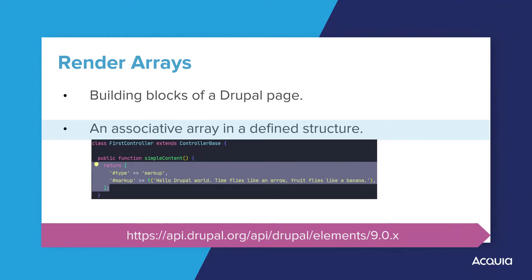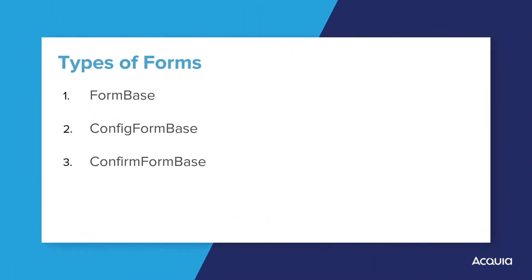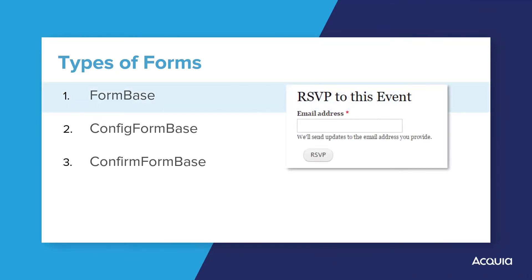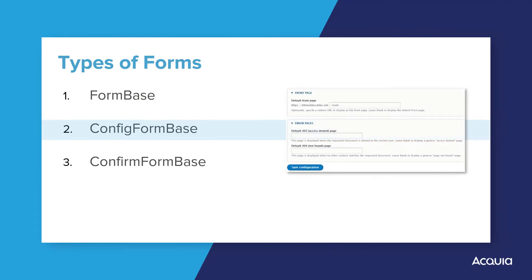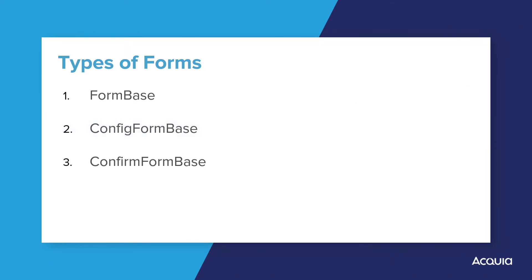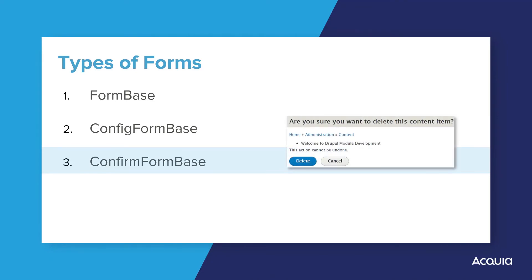There are three types of forms commonly used in Drupal. Each type has a base class for you to extend in your own custom module. First is FormBase — the most generic base class for generating forms; the other two form types extend this class. Next is ConfigFormBase, used for system configuration forms like the site information form. The third form type is ConfirmFormBase, which provides users with a form to confirm an action such as deleting a piece of content.